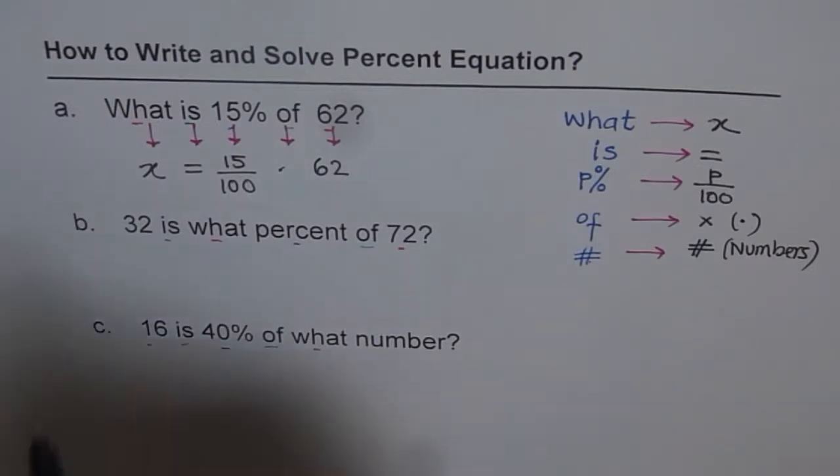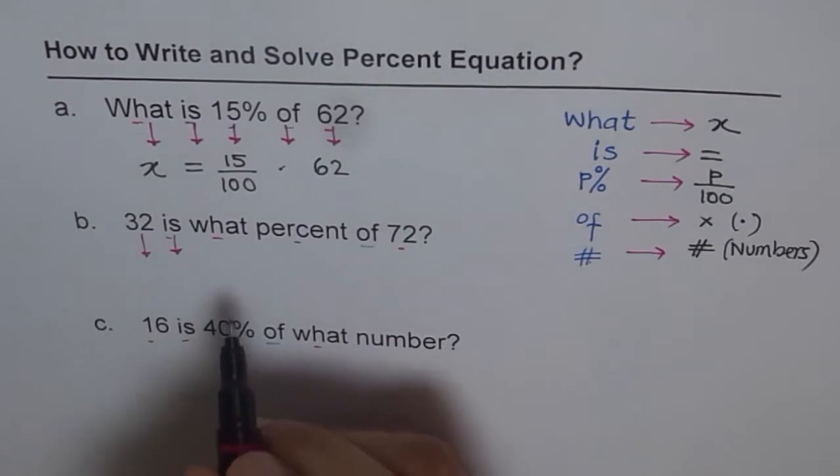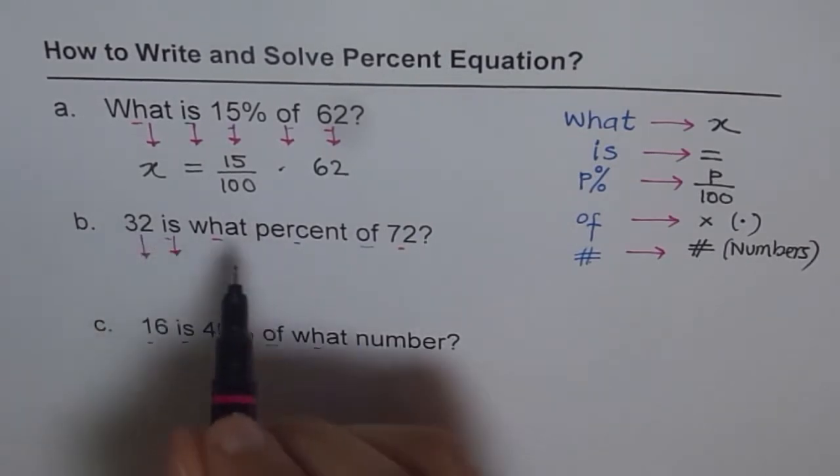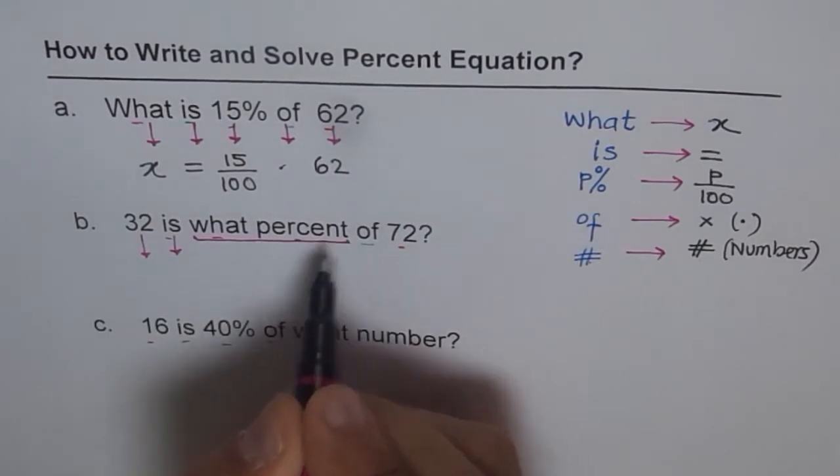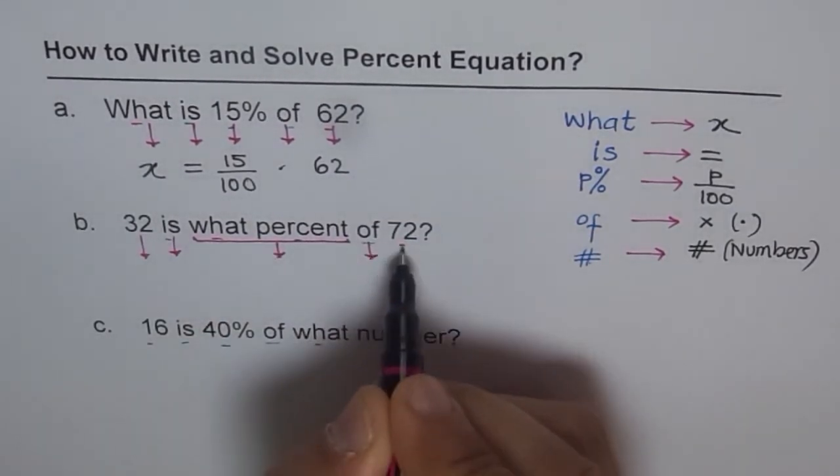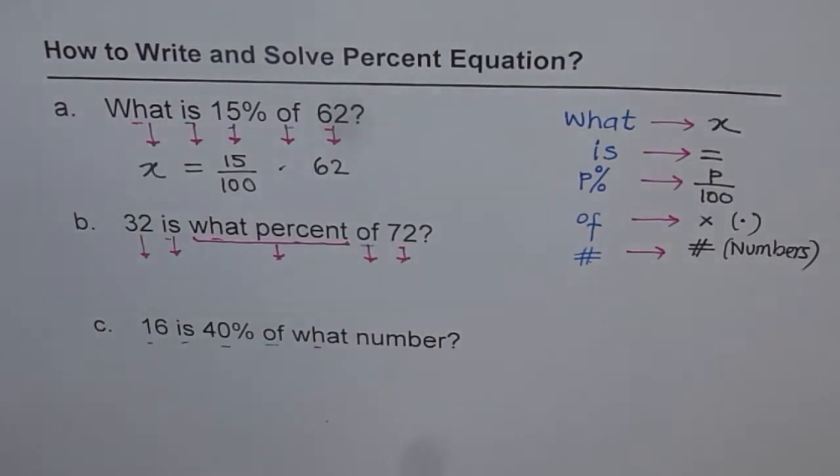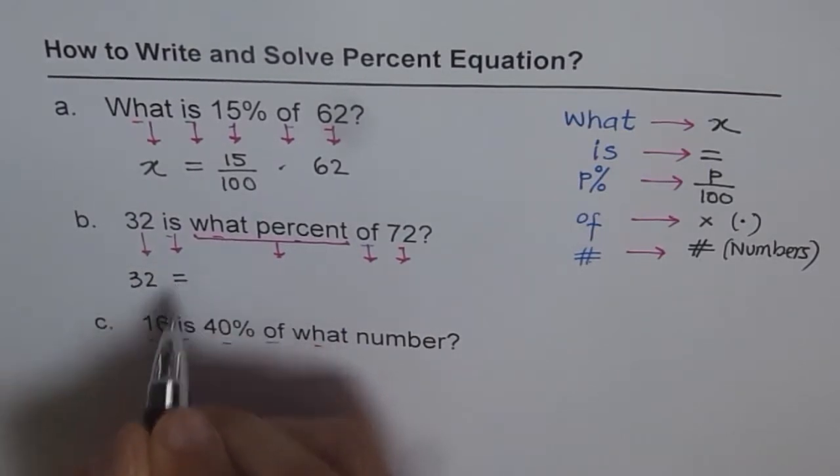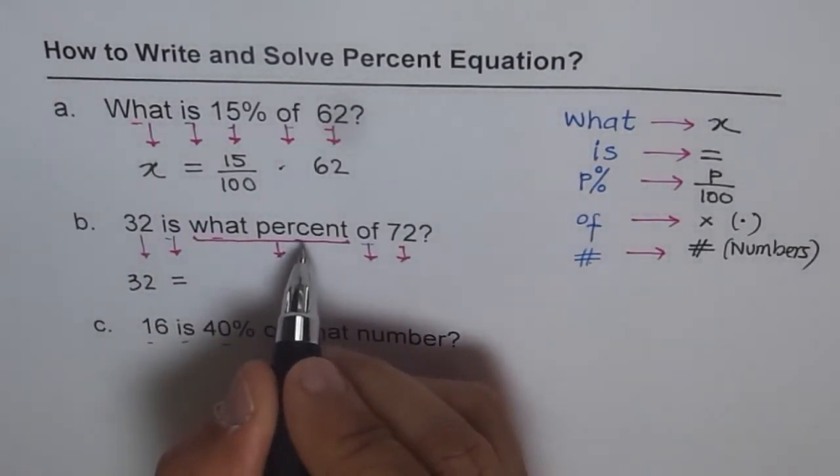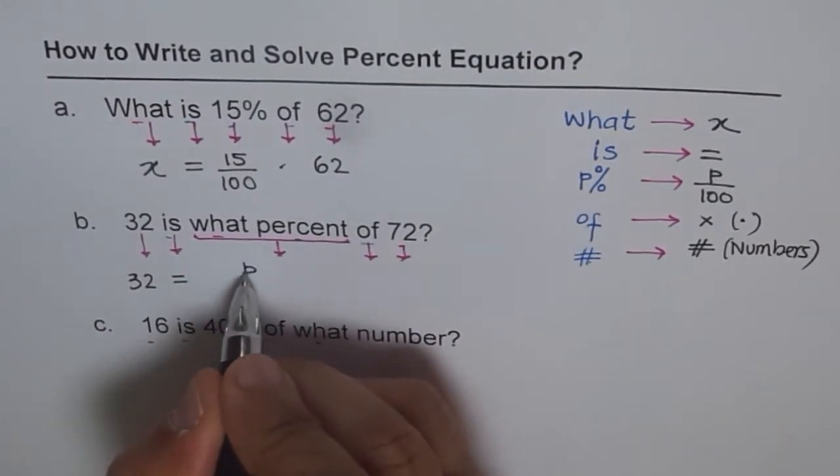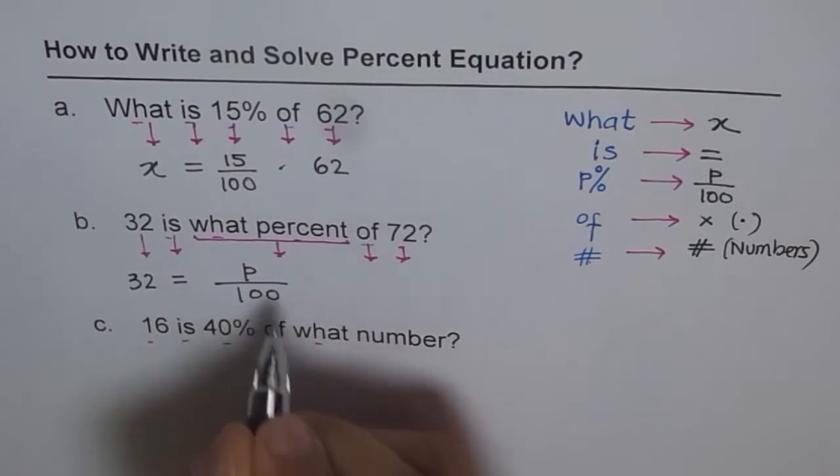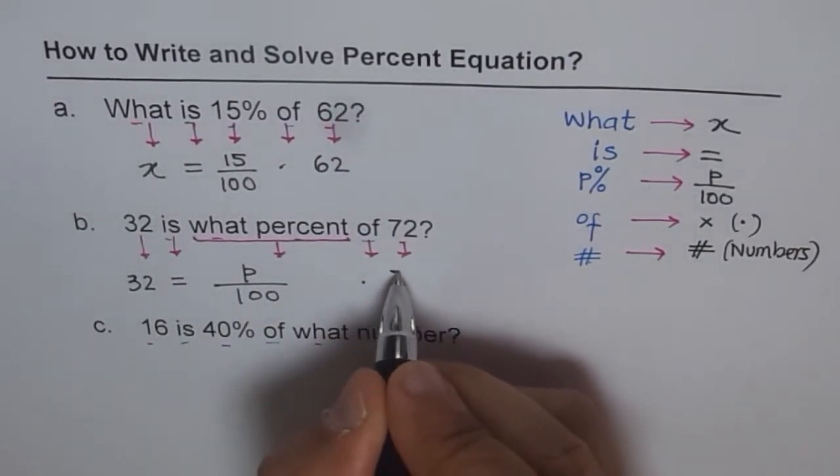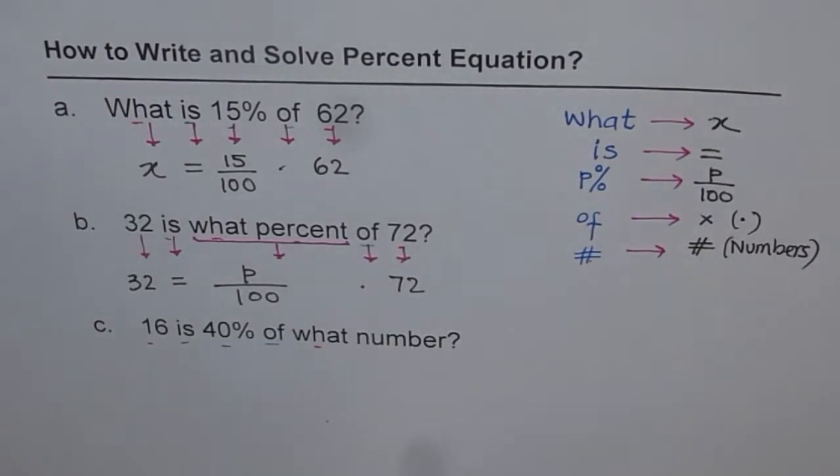Let's do one more just to gain confidence. So this time I'm just drawing the arrows, giving you time to write your own equation. 32 is what percent of 72. So what percent is something unknown which I'm saying, of, and 32 is the number, 72 is the number. We get 32 equals what percent. We don't know that P. So we'll write P percent, P over 100, of means multiplication, 72 is the number.